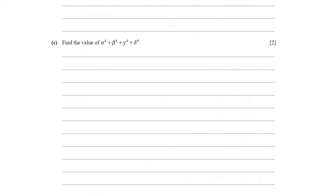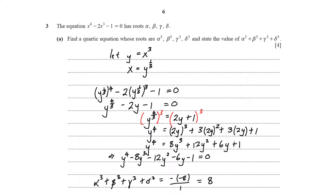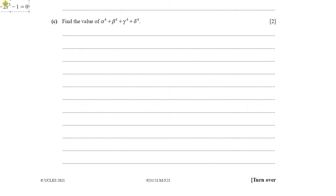Part (c): find the value of alpha⁴ plus beta⁴ plus gamma⁴ plus delta⁴. For this we use the original equation in terms of x: x⁴ minus 2x³ minus 1 equals 0. Rearranging, we make x⁴ the subject: x⁴ equals 2x³ plus 1.